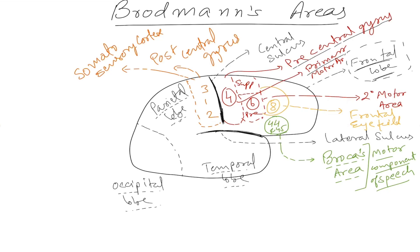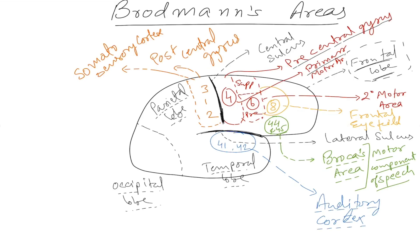In the temporal lobe there is a very important area — area number 41 and area number 42 — which is your auditory cortex, or auditory area. This area is responsible for the reception of sound. When a sound is perceived and speech is being processed, the understanding of that sound takes place in the adjacent region.